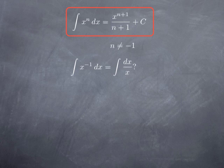We know that 1 over x is a continuous function as long as we are on an interval that does not contain 0. And since every continuous function has an anti-derivative on an interval where it's continuous, that means an anti-derivative of 1 over x makes sense as long as we restrict ourselves either to the interval (0, ∞) or to the interval (−∞, 0).